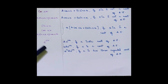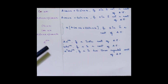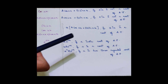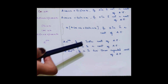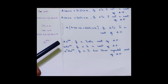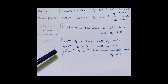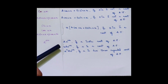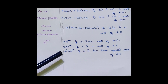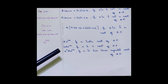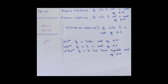Another format q(x) could take is e to the power of ax. If a is not a root of the auxiliary equation, then A·e^(ax) is the trial solution. If it is a one-time repeated root, then you multiply it by x. If it's a two-time repeated root, you multiply it by x², and so on.